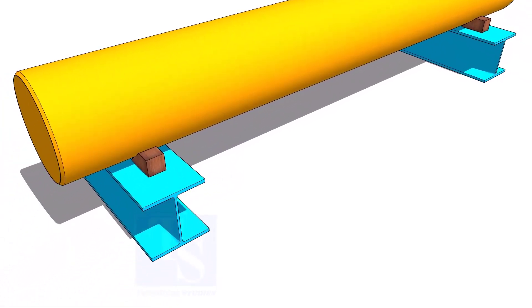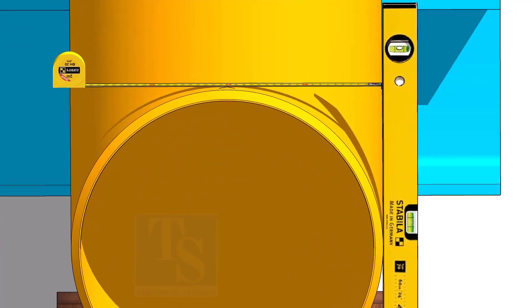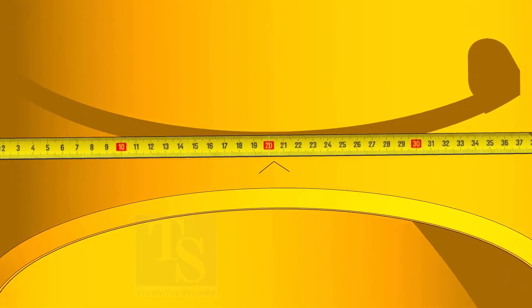After leveling the pipe, hold a level bottle vertically at the side of the pipe as shown. Mark the half OD on the top of the pipe and cross-check from the opposite side.